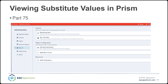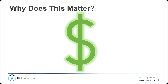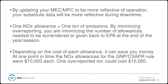Why does any of this matter? Money. You do not want to be over-reporting — nobody wants to do that — especially with all the changes going on with the good neighbor plan. By updating your MEC and MPC to be more reflective of operation, your substitute data will be more reflective during downtime. One NOx allowance equals one ton of emissions. By minimizing over-reporting, you're minimizing the number of allowances needed to be surrendered to the EPA at the end of the year season. At one point allowances were $10,000 each, so one over-reported ton could cost $10,000. This can be a good suggestion for accounting purposes simply.